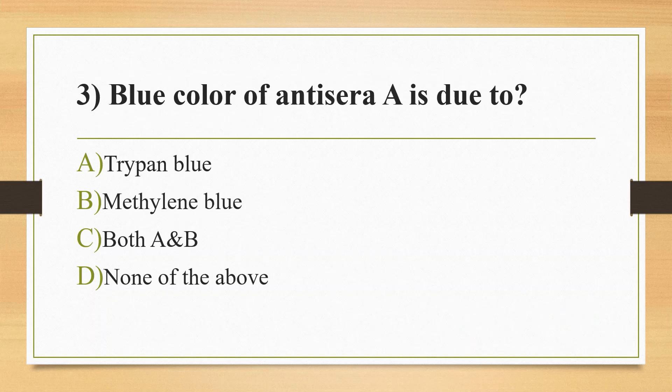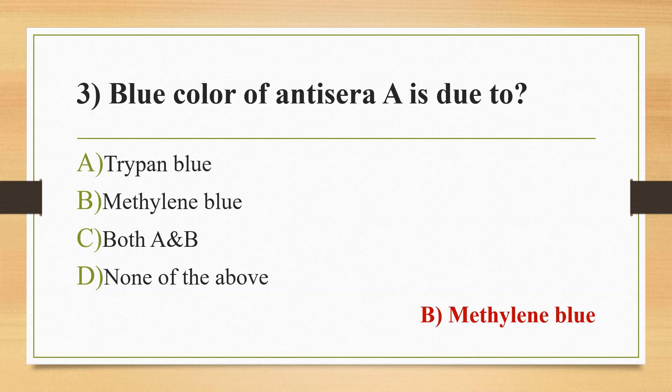Third question: the blue color of anti-sera A is due to — option A: trypan blue, option B: methylene blue, option C: both A and B, option D: none of the above. The answer is methylene blue. Trypan blue is a vital dye which stains only living cells. Based on instability and other characteristics, all that has changed these days.